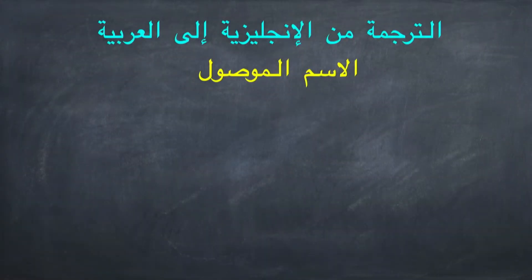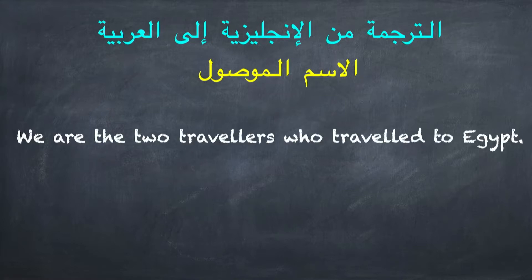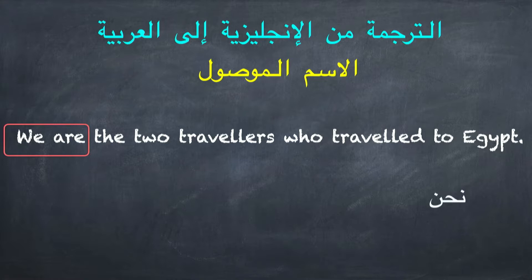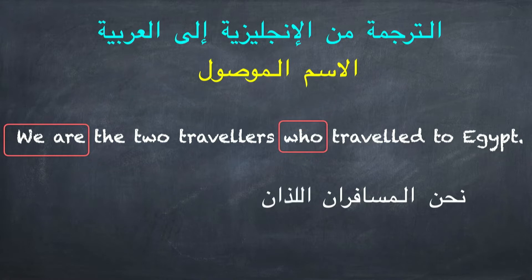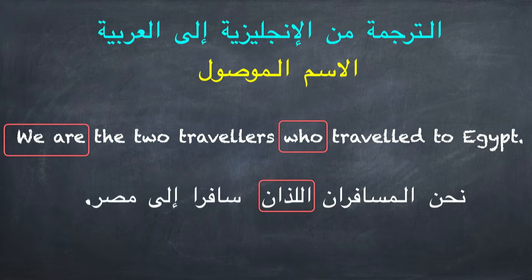هيا أعزائي نترجم الجملة الأخيرة وهي تتكون من الاسم الموصول: 'We are the two travelers who traveled to Egypt'. 'We are' = نحن. 'The two travelers' = المسافران. الاسم الموصول هنا = اللذان، وهو مثنى. 'Travelled to Egypt' = سافرا إلى مصر.